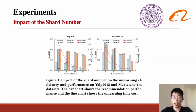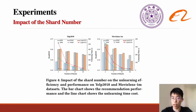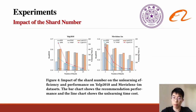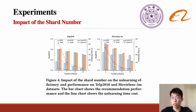We also conducted experiments to investigate the impact of shard number. Results show that average unlearning time decreases as the number of shards increases for all recommendation models. Meanwhile, recommendation performance of all three models slightly decreases. In practice, the number of shards should be carefully selected to balance unlearning efficiency and recommendation performance.